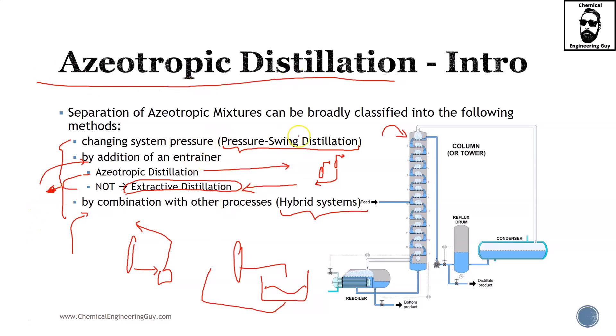We're going to cover azeotropic distillation first — the main case in which we add an entrainer and solve for it — and extractive distillation will come afterwards.